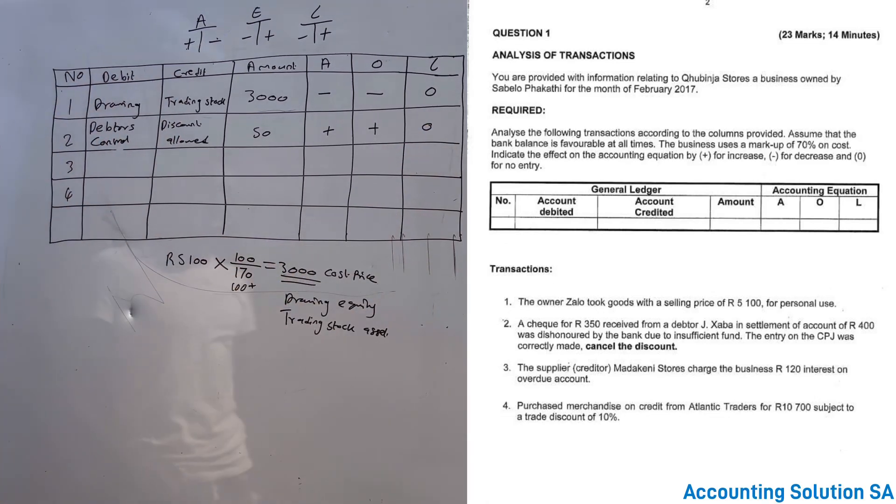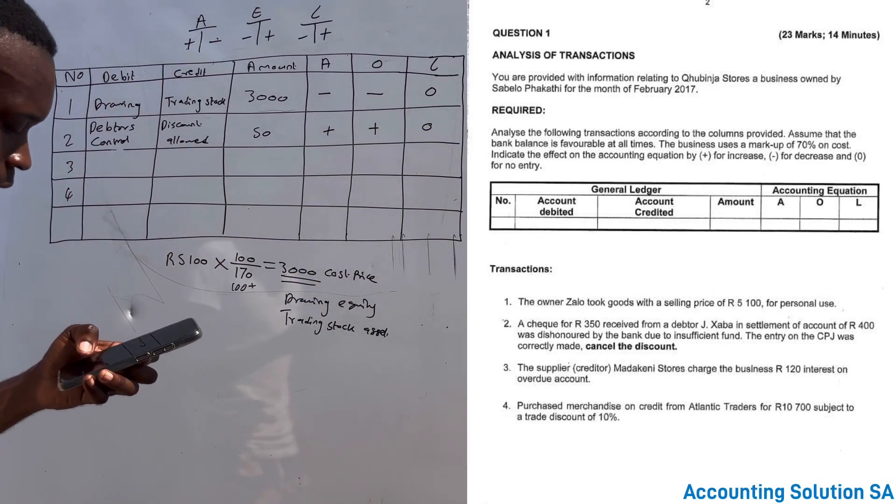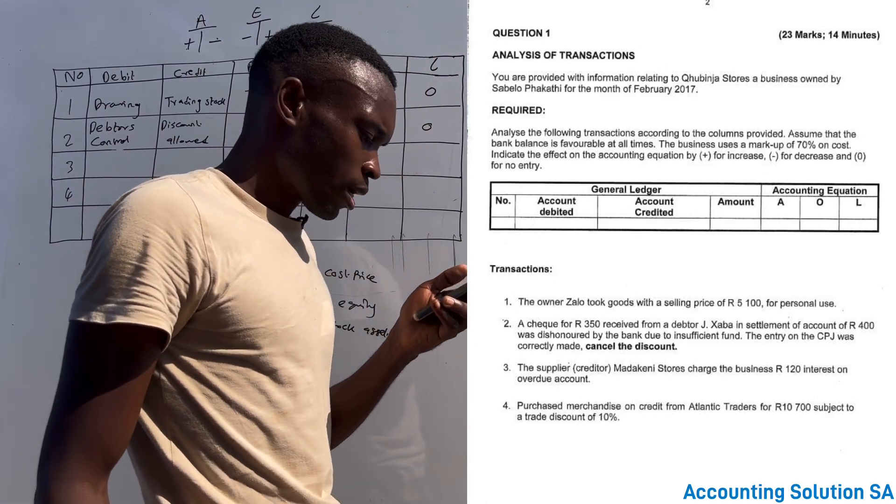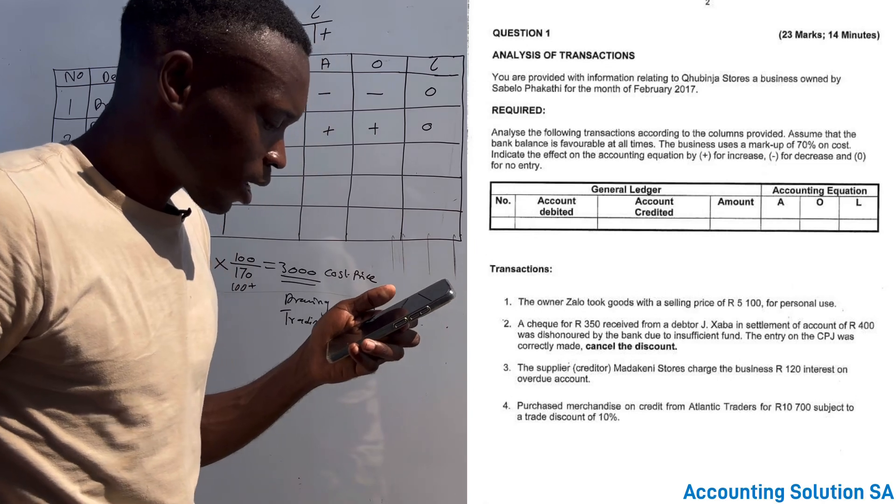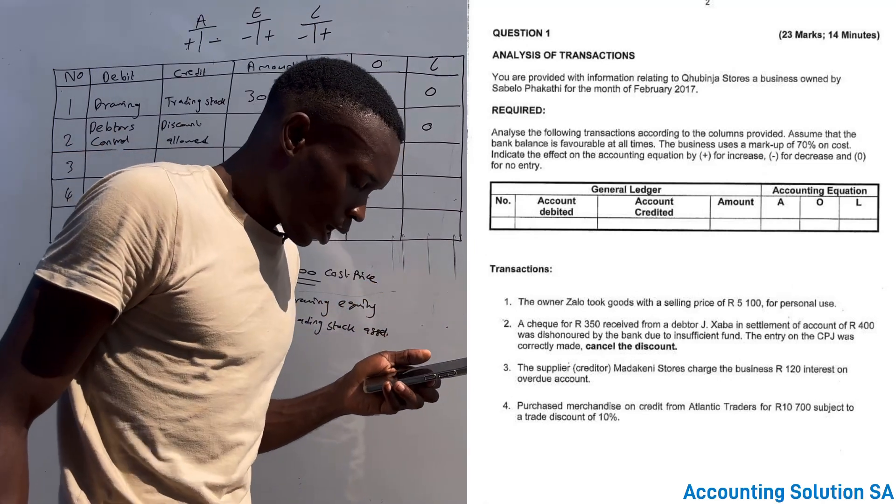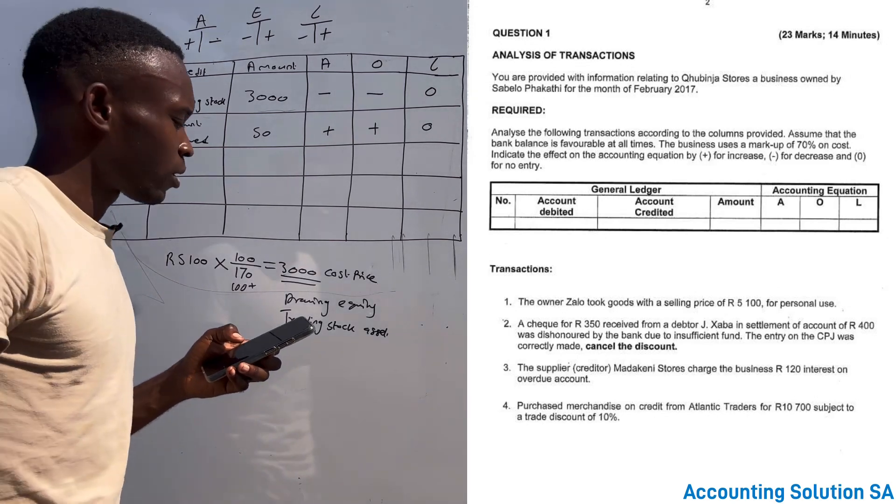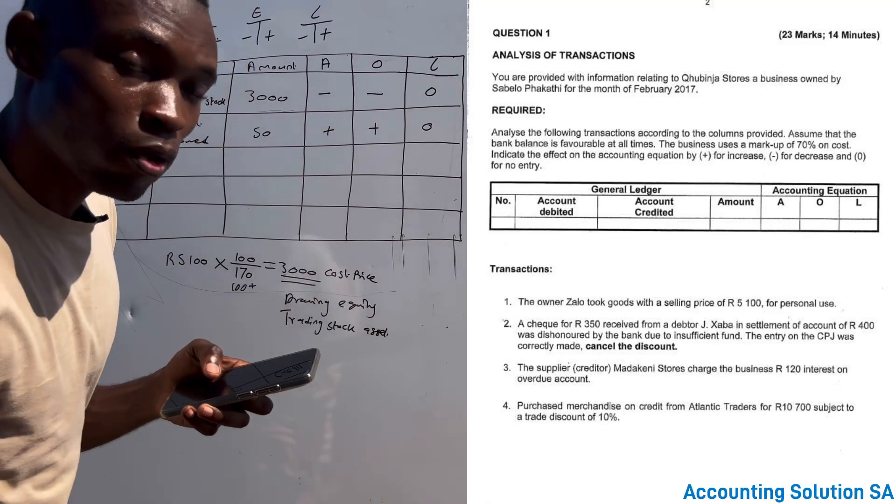The next one, they say the supplier Madalkan Stores charged the business 120 interest on overdue account.